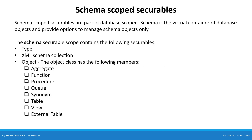The third is schema scope Securables. Schema scope Securables are part of the database scope. Schema is a virtual container of database objects and provides an option to manage schema objects only. The schema scope Securables contain the following types: XML schema collection and objects. Under objects, every database object comes under this — aggregate, function, procedure, queue, synonym, table, view, and external tables.